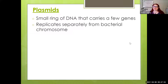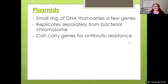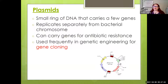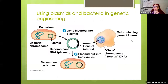A plasmid is read within the cell like the other DNA is. It replicates separately from the bacterial chromosome and can carry genes for things like antibiotic resistance. It's often used for genetic engineering, including gene cloning. When we think of cloning we think of things like Dolly the sheep, but gene cloning is just about one little segment of DNA — we can make extra copies of a specific gene through plasmids.